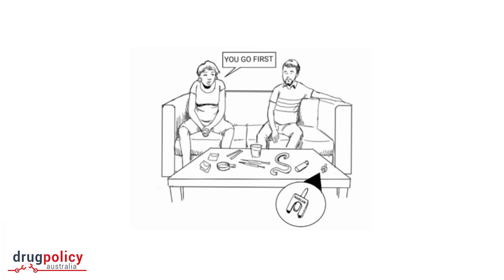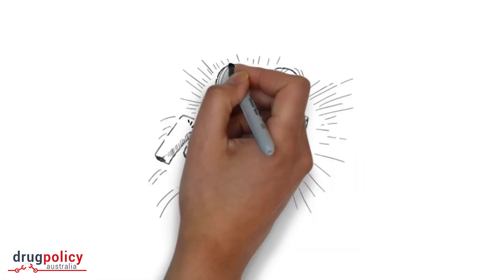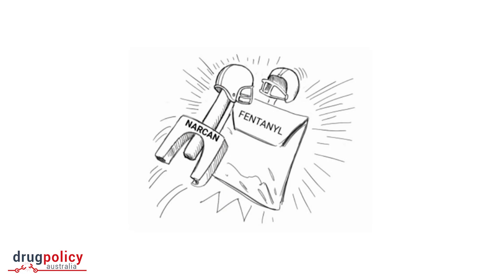Narcan, also known as naloxone, is the drug that reverses opiate overdose. Despite what some fake news reports have said, there isn't Narcan resistant fentanyl. Narcan is an opiate blocker and fentanyl is a synthetic opiate. Period. End of story.